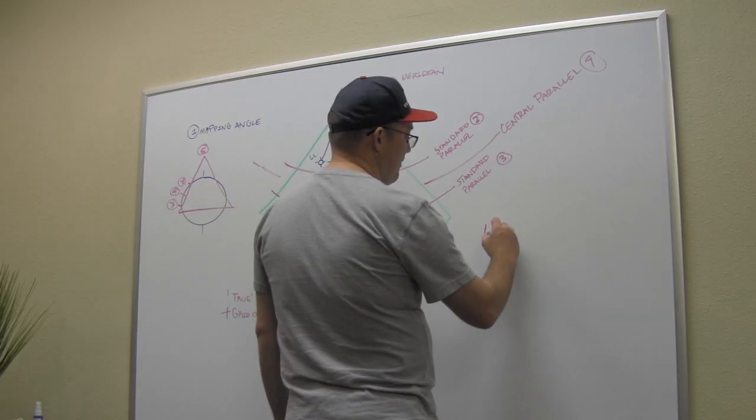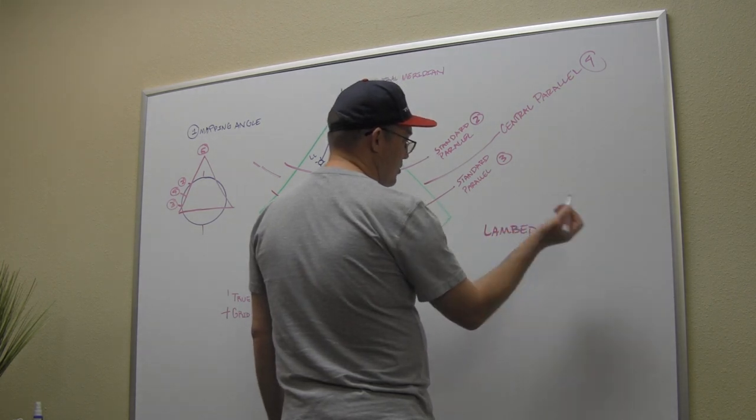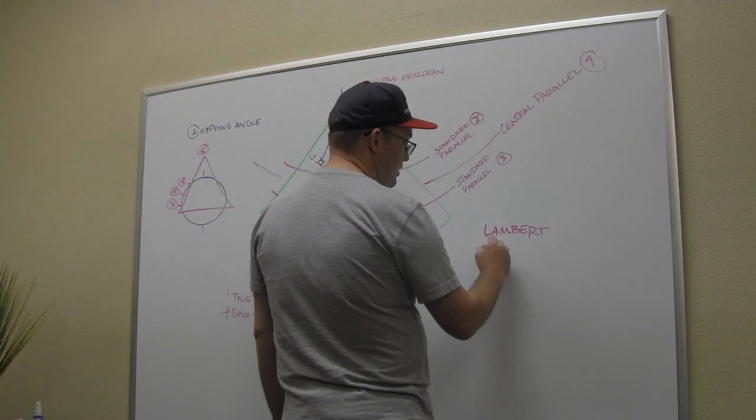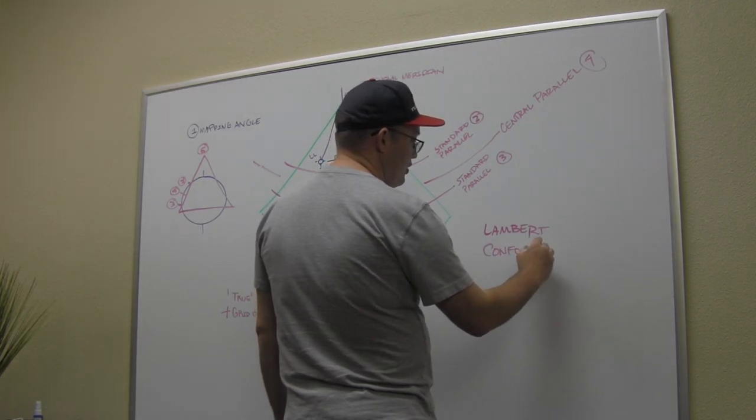All the state plane coordinate systems are made from solids that easily project into a flat surface. That's why they're called projections, math projections. Would you use a sphere? No, because that doesn't neatly project to a flat surface. So we use cones.